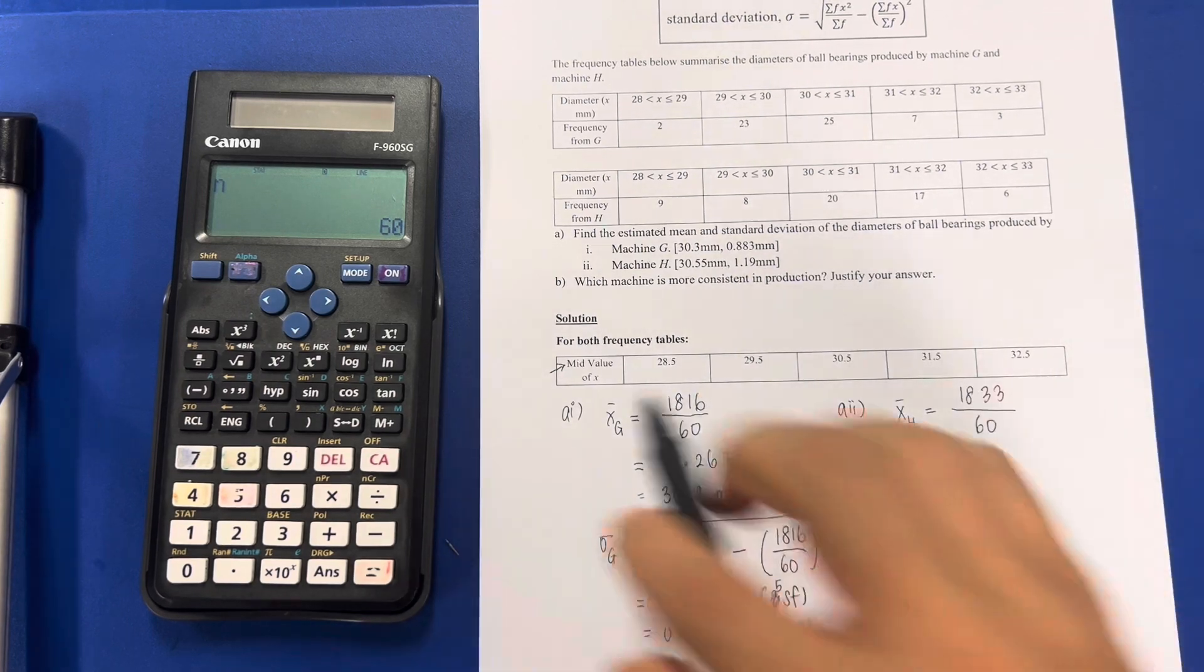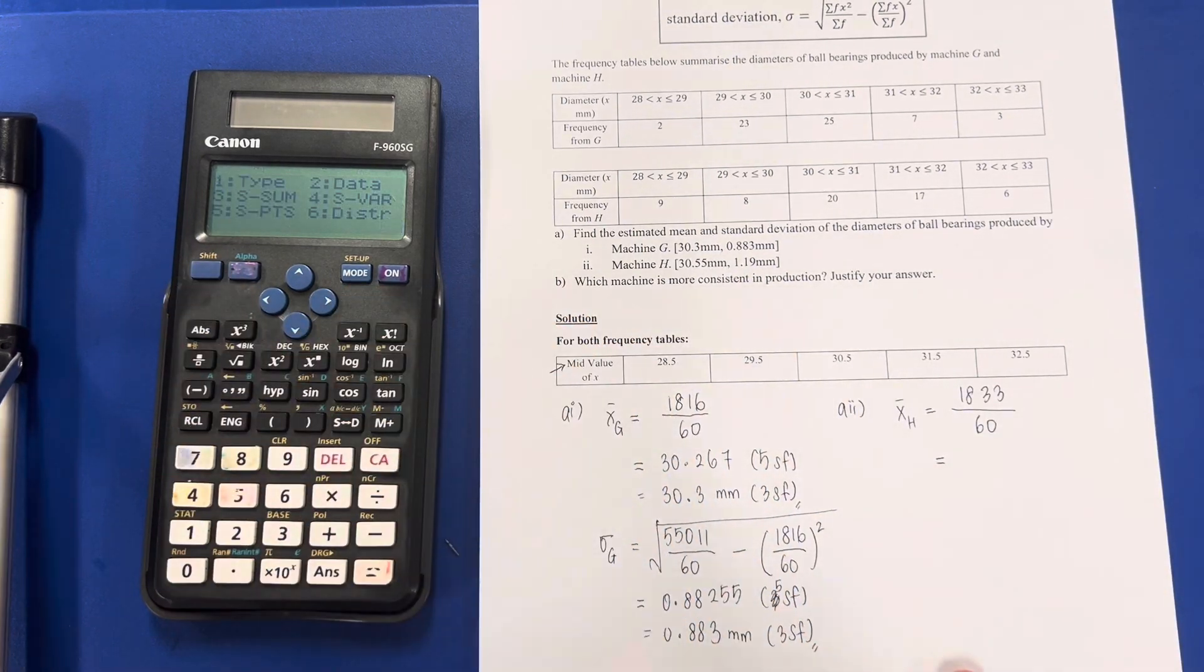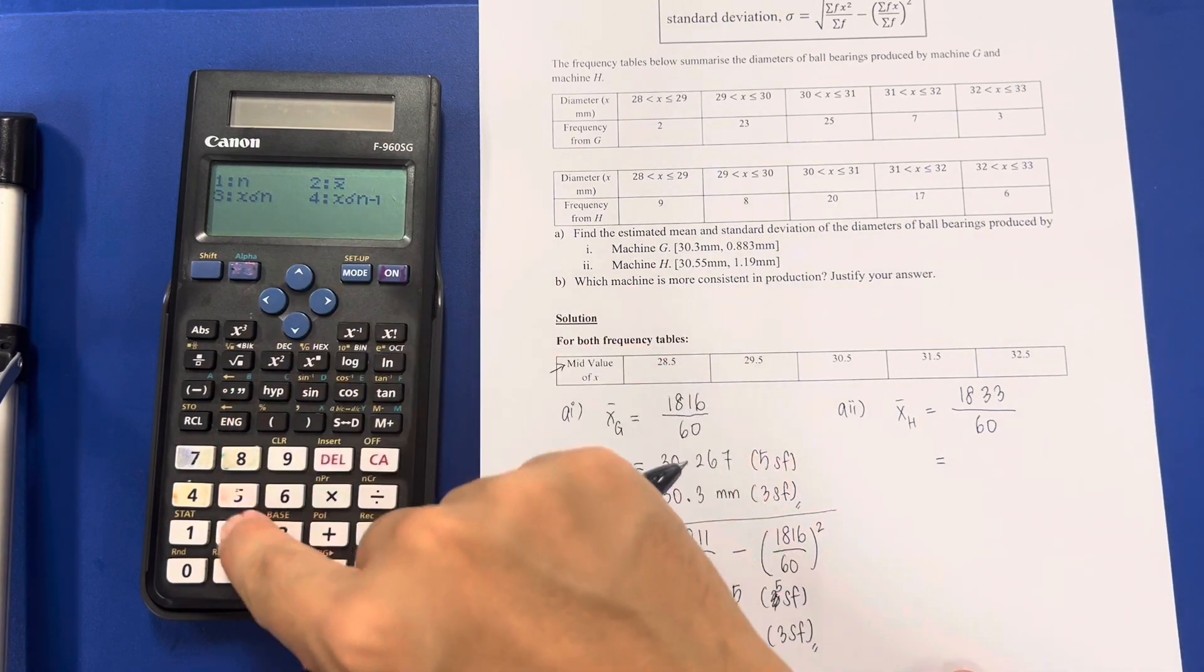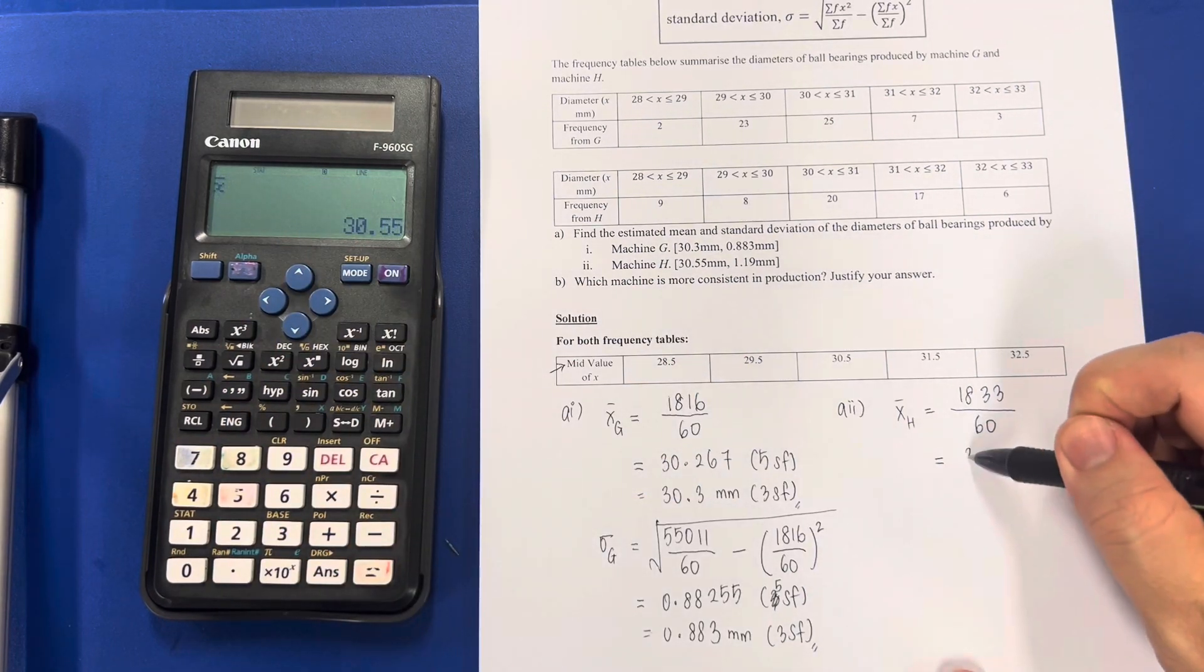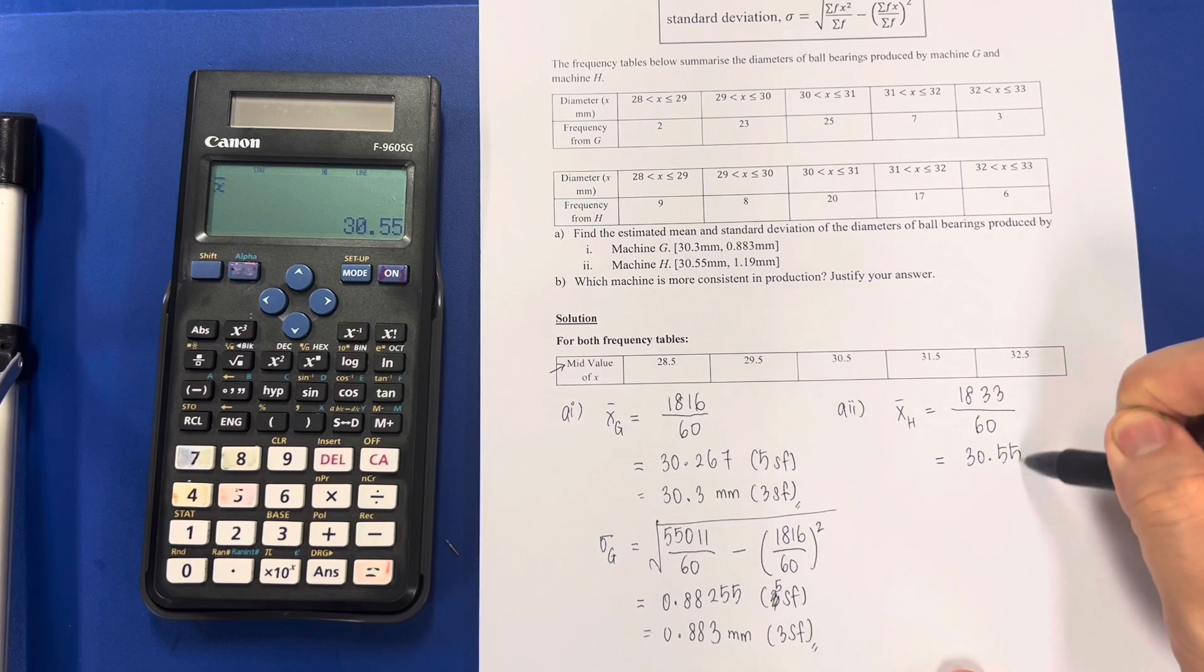Shift 1, 4 and press number 2: 30.55 mm.